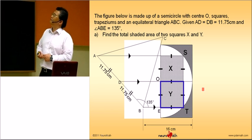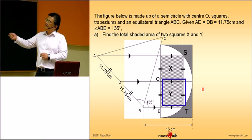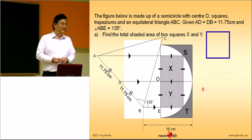You are supposed to find the area of X and Y, the two squares. Can you see? This is a square. We are supposed to find the area of the square.